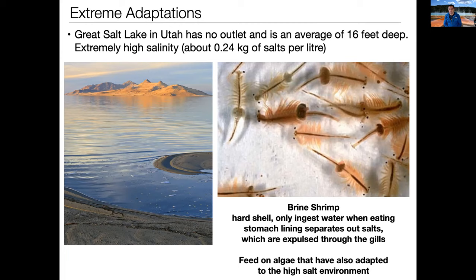Not much lives in the Salt Lake. There are birds and things on the shorelines, and a species of brine flies in the area. But in the water itself, mostly there are only algae and cyanobacteria. And there are these things called brine shrimp — those of you who grew up in the United States may have encountered them as kids; they're called sea monkeys. You can grow them at home. They're small but visible, and they grow in the Great Salt Lake. They have adapted to the extremely high salinity and no other animal has.